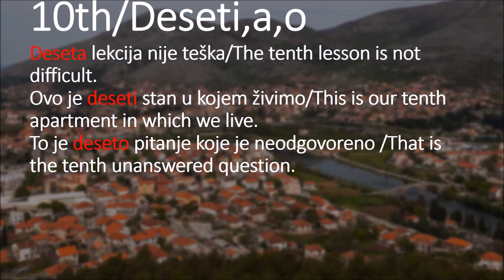Second example: ovo je deseti stan u kojim živimo - this is the tenth apartment in which we live. We're using deseti because stan is masculine. The last one: to je deseto pitanje koje je neodgovoreno - that is the tenth unanswered question. Pitanje is neuter, therefore we are using deseto.